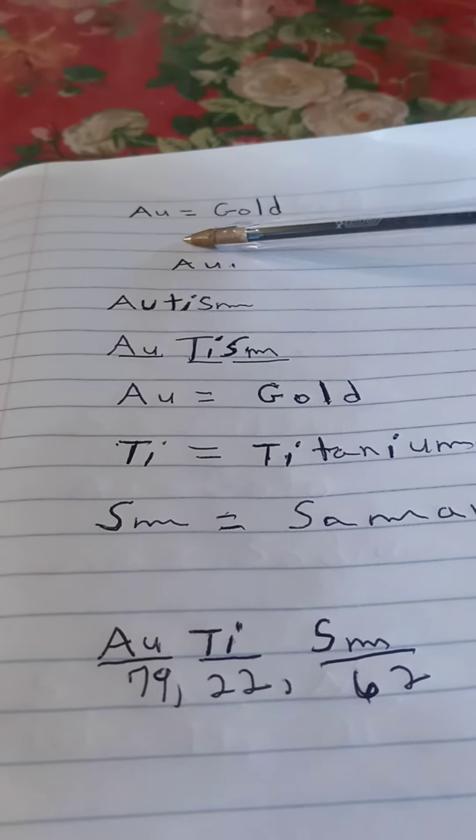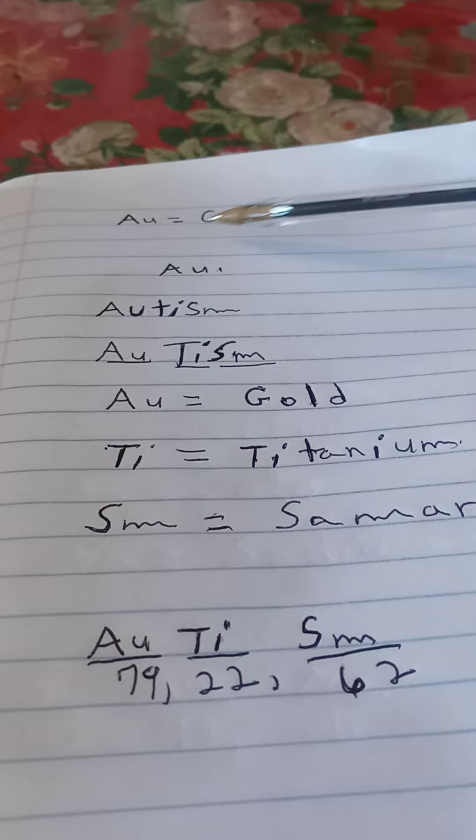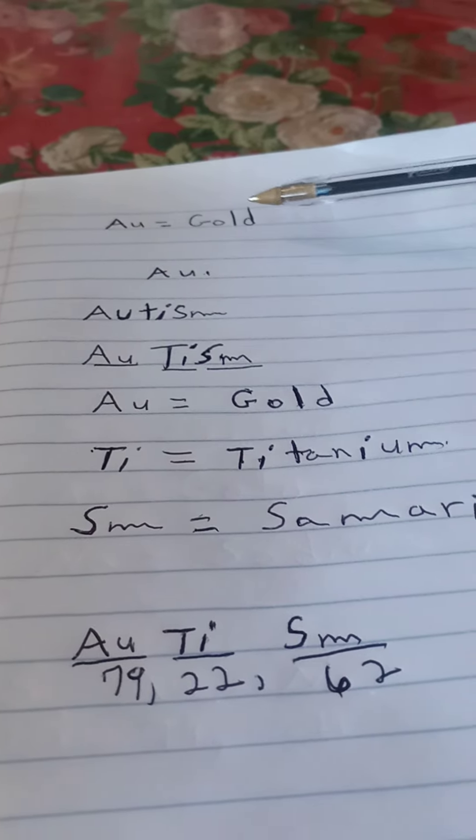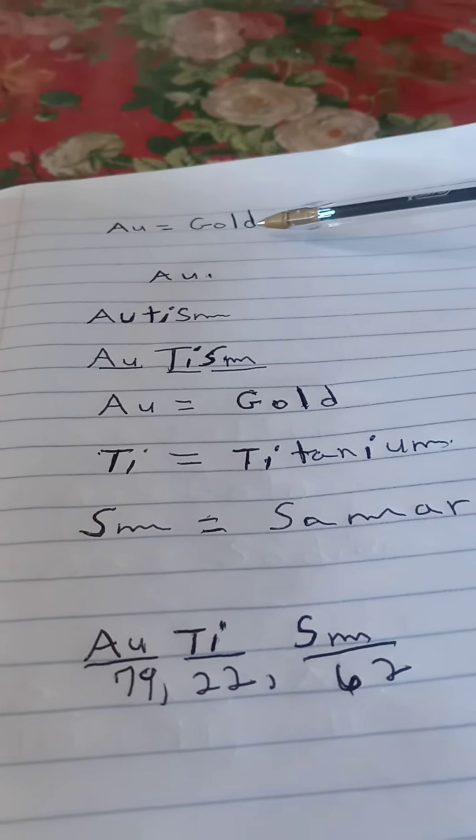The chemical symbol capital A-U equals gold. It stands for gold. It's a chemical symbol for the element of gold. G, capital G-O-L-D.